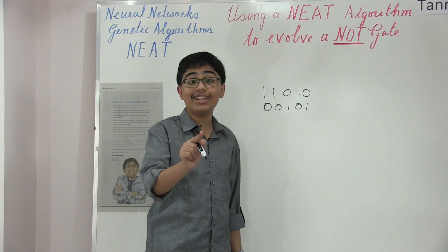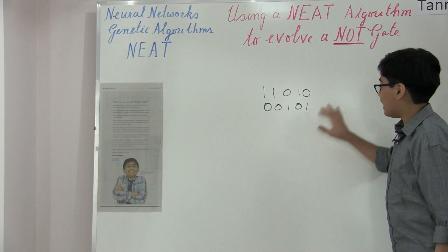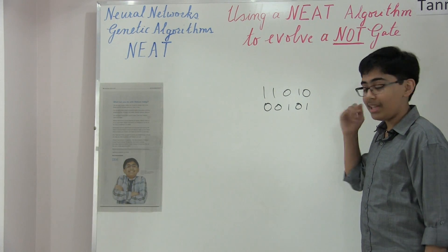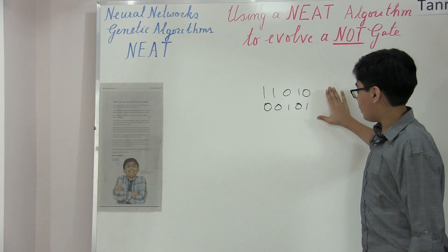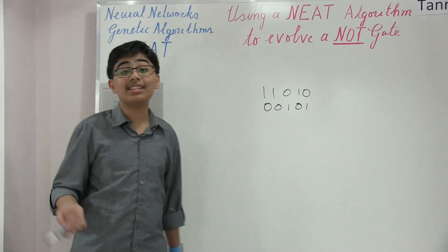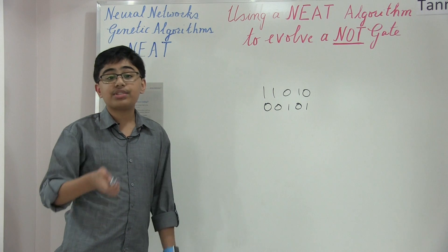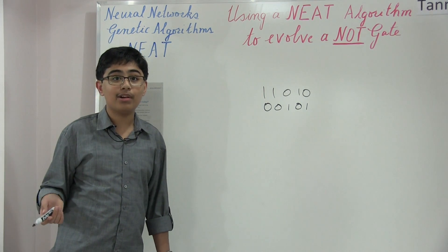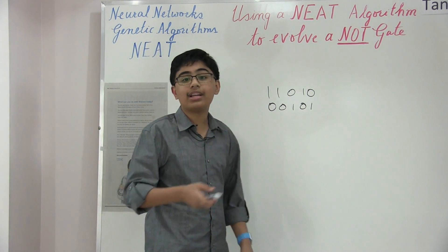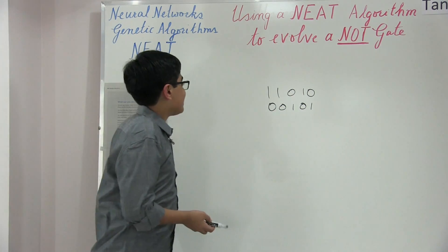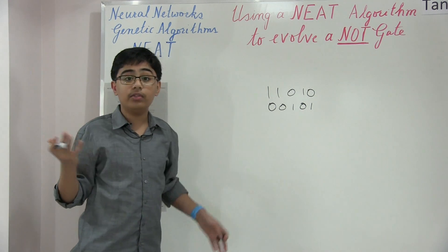It is fun, just not as fun as the method I'm about to introduce. Today I'm going to be introducing a genetic algorithm into this mix in order to evolve a neural network that can act as a NOT gate. This is built in Python using the neat-python library, which is actually a library created by Code Reclaimers. They've created a library called neat-python which allows you to use genetic algorithms to evolve neural networks.